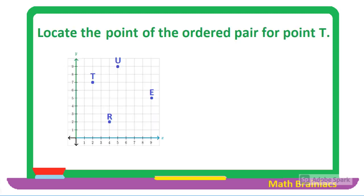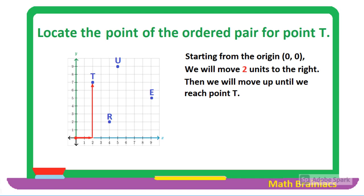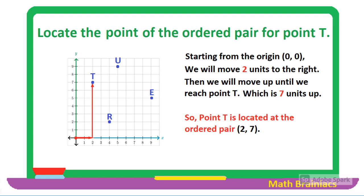Let us work on this example so that you will be guided. Locate the point of the ordered pair. For point T, we are going to start from the origin, which is (0, 0) — I mark it with a red dot. From the origin, we will move two units to the right, then move up seven units until we reach point T. So point T is located at the ordered pair (2, 7).